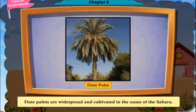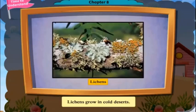Date palms are widespread and cultivated in the oasis of the Sahara. Lichens grow in cold deserts.